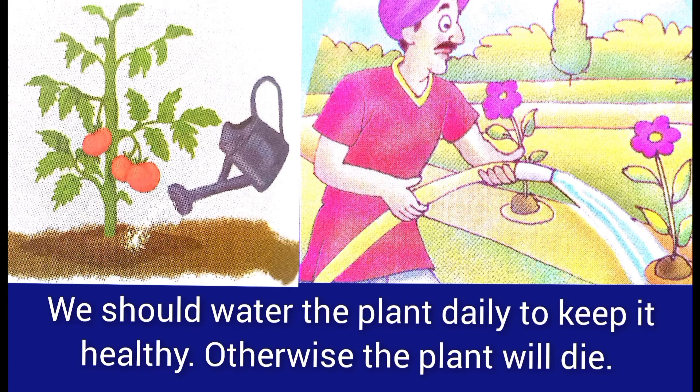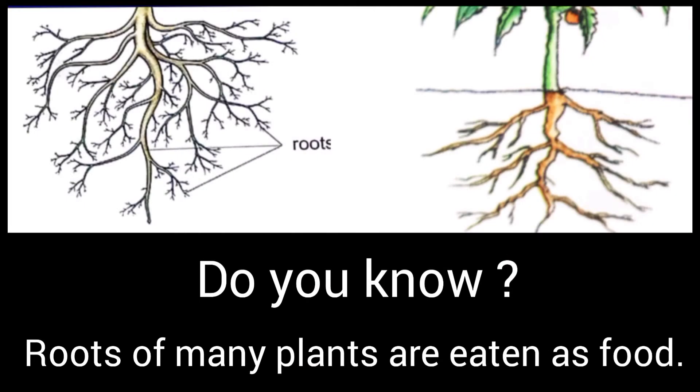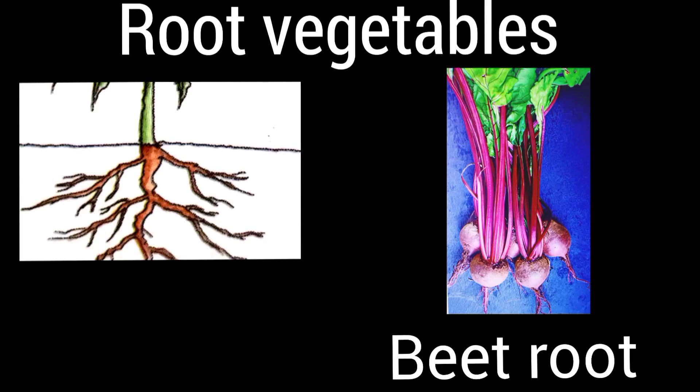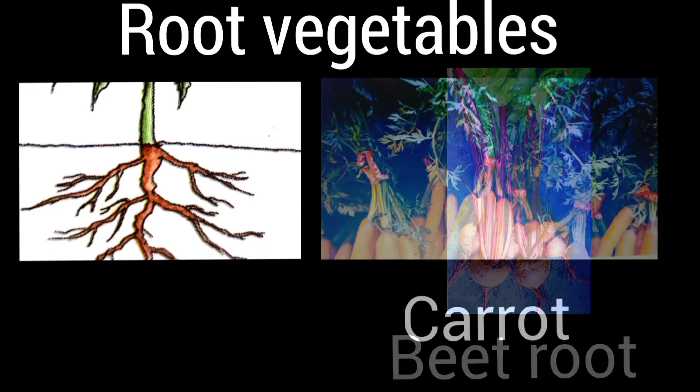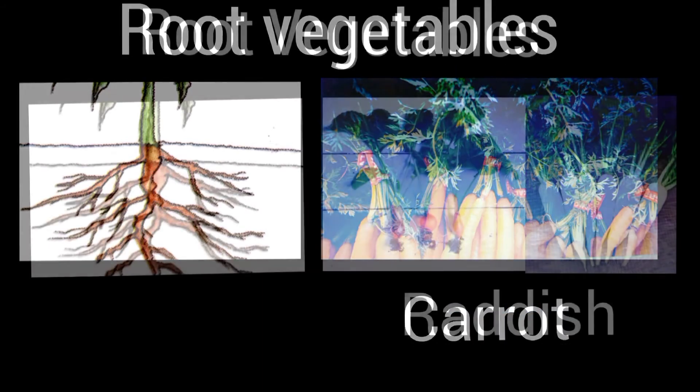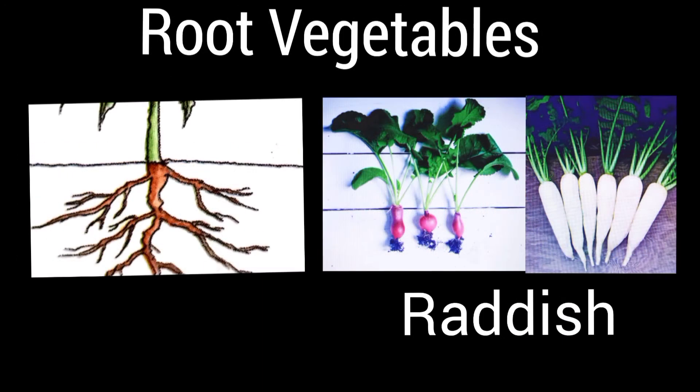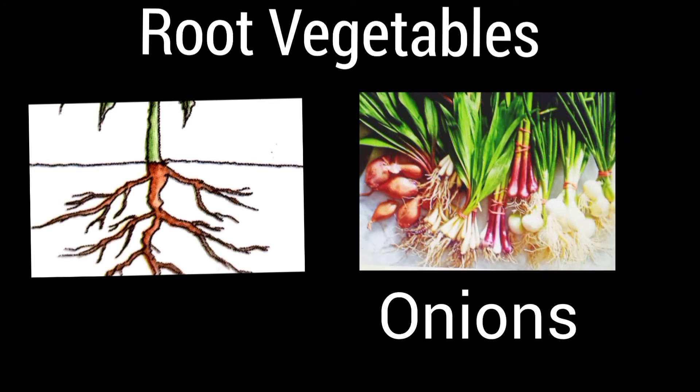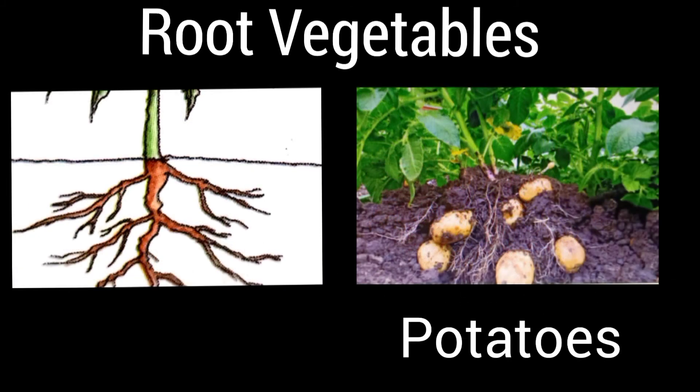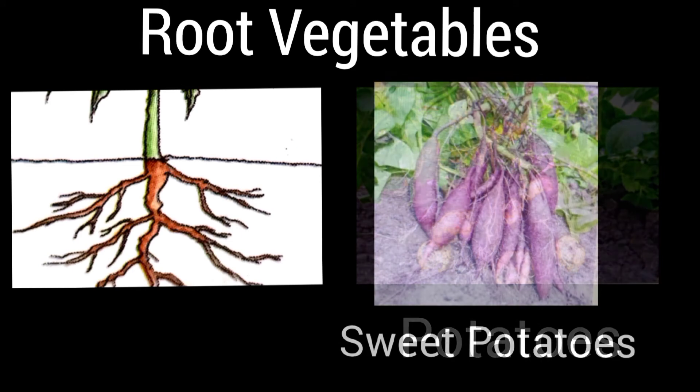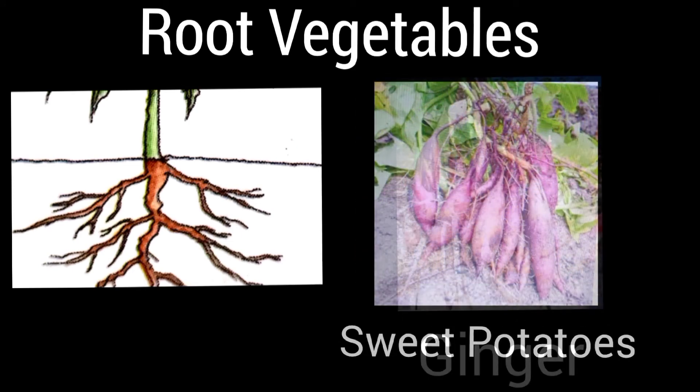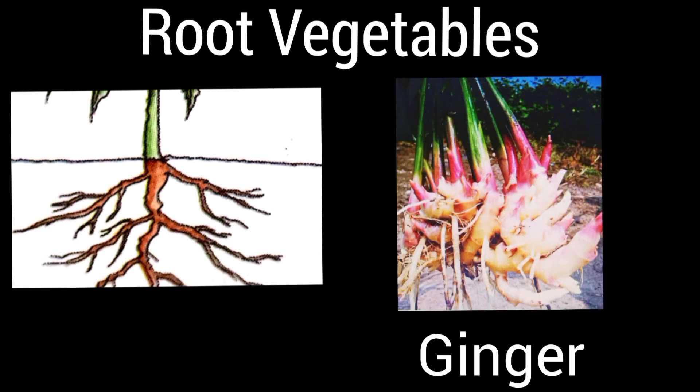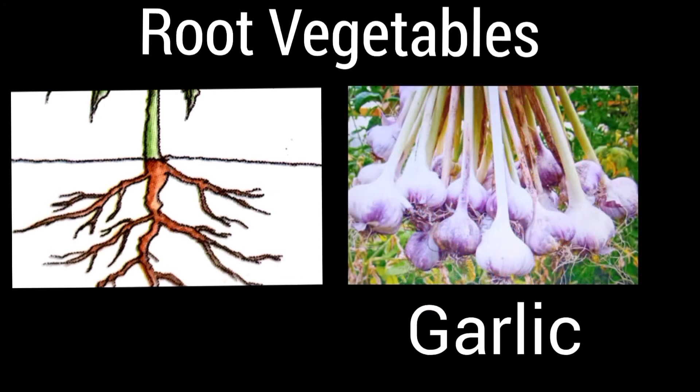Do you know children, roots of many plants are eaten as food, such as beetroot, carrot, radish, onions, potatoes, sweet potatoes, ginger, and garlic.